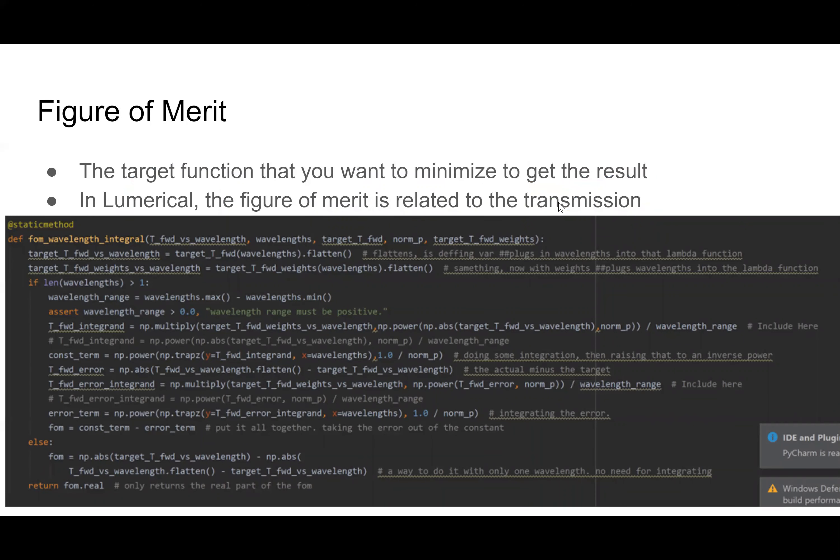So I've been talking a lot about the figure of merit. What is it? The figure of merit is the target that you want to minimize to get the result. In Lumerical, the figure of merit is related to the transmission, so how much power is at your source versus how much power is at your monitor. I'm not going to go into gory detail about this chunk of code, but this is where the target, the figure of merit is calculated. And it is using this target T right here, which is your target transmission. And what I have been working on is changing that target to get a specific transmission spectrum so that way I could selectively exclude a specific wavelength.